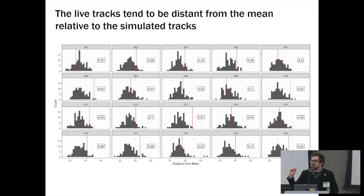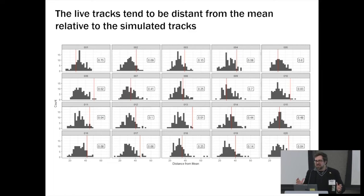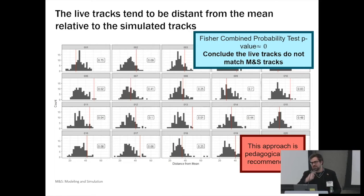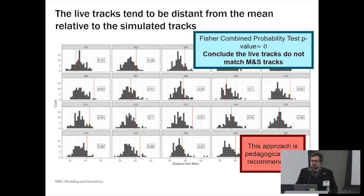We look at the distribution of distances within a vignette — most are M&S distances, but the red line in each picture shows where the live track fell in terms of distance from the mean. We check whether the live track tends to end up in the right-hand tail of these distributions. If it's on that tail, the live track tends to be further from the mean than all other M&S tracks, meaning it doesn't seem to come from the same distribution. We can take each of those numbers and combine them using a statistical procedure known as the Fisher Combined Probability Test to make an overall assessment. The p-value is basically zero — there are about 16 zeros before the first significant digit — conclusively determining that at least one live track isn't matching up to its corresponding M&S tracks.